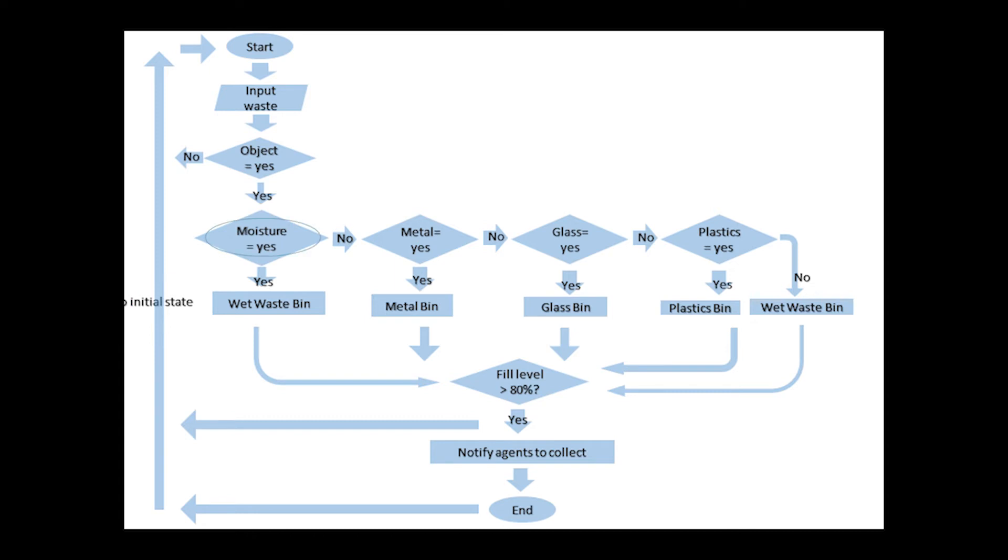Then following the sequence, it will activate the moisture sensor first. If yes, it will move to the wet waste bin. If not, it will activate the metal sensor to sense the metal. If it's a yes, then it will go to the metal bin. If not, it will proceed to activate the capacitive sensor to detect glass and if glass is detected it will move to the glass bin.